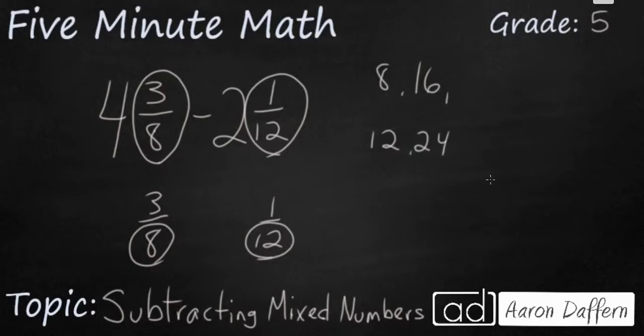If I do my third multiple of 8, you see we have 24 there. That's going to be enough. So my least common multiple or LCM of 8 and 12 is going to be 24.